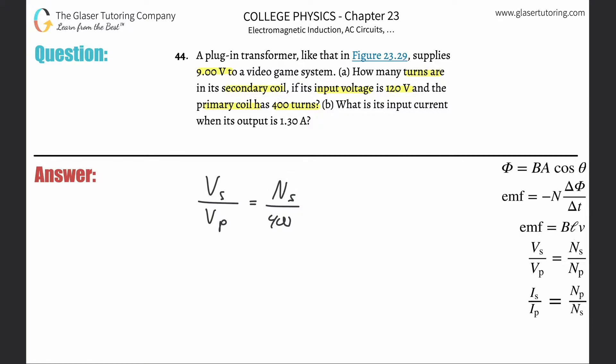And then it says the transformer supplies nine volts to a video game system and the input voltage is 120, right? So basically what we have to consider is that the input voltage, if you think about input, it almost means like the start, the start voltage. So that would be the primary voltage. That's 120.